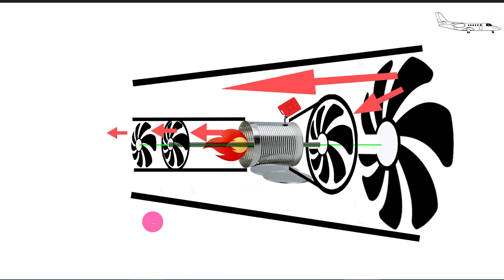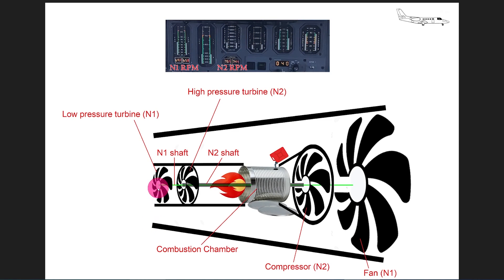To recap all the parts, any fan that absorbs energy from the flame is called a turbine. Try to remember that. The first turbine the fire hits is the high pressure turbine, which spins a compressor up front via the N2 shaft. The low pressure turbine is capturing the fire energy remaining and will turn the big fan in the front via the N1 shaft.